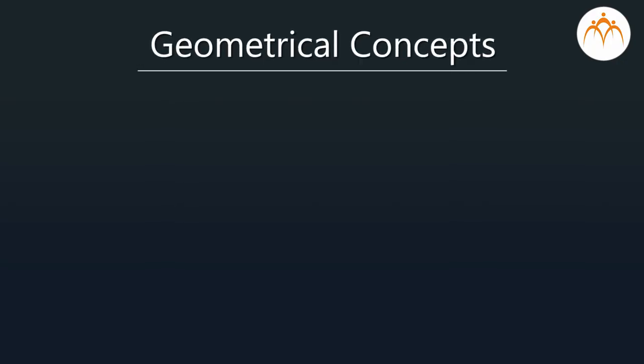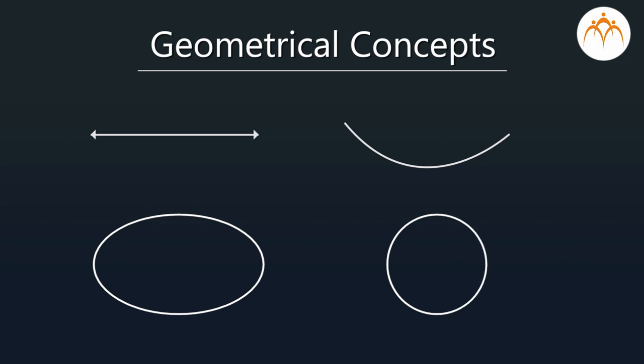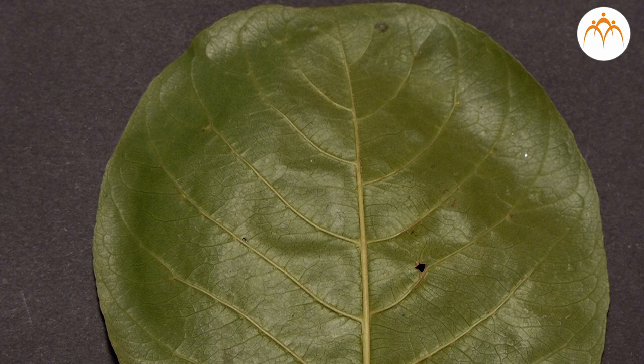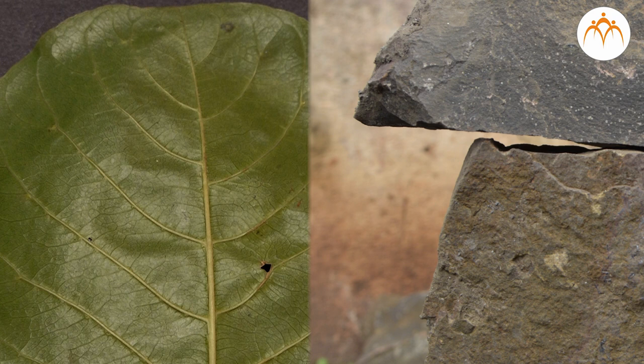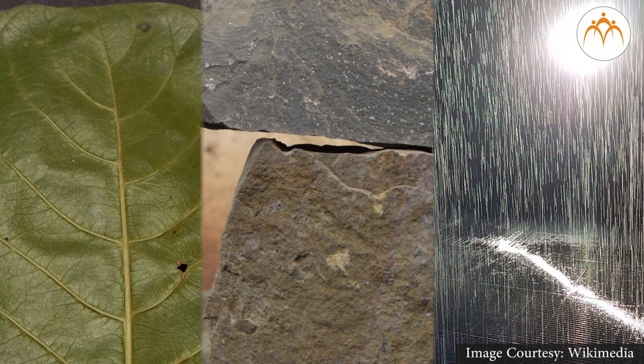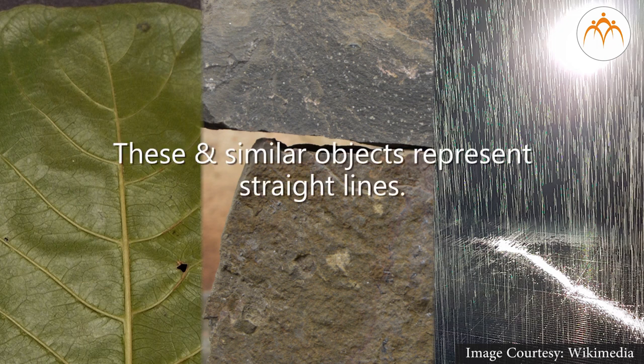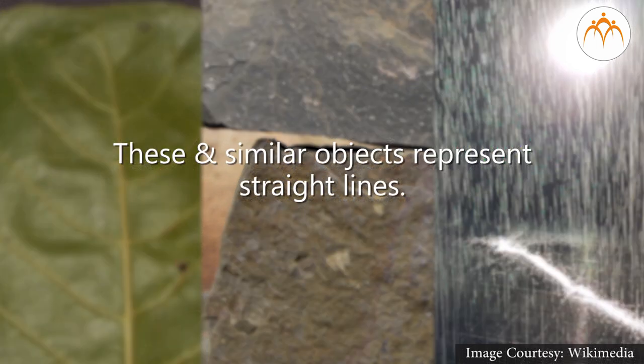Geometrical concepts such as a straight line, a curved line, and different shapes such as an oval, a circle, etc., seem to be derived from the living and non-living elements of the nature around us. If you look at veins on the leaf, the edges of sharp objects like stones, then raindrops falling one after another, and many such objects in the nature — these represent straight lines.